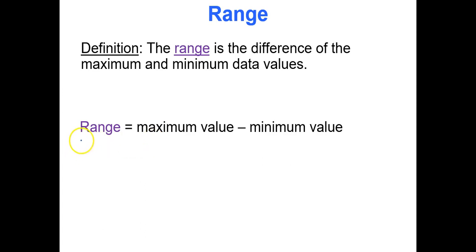The range is simply the maximum data value minus the minimum data value. Remember we're looking at measures of variation or measures of spread—how spread out are the data values?